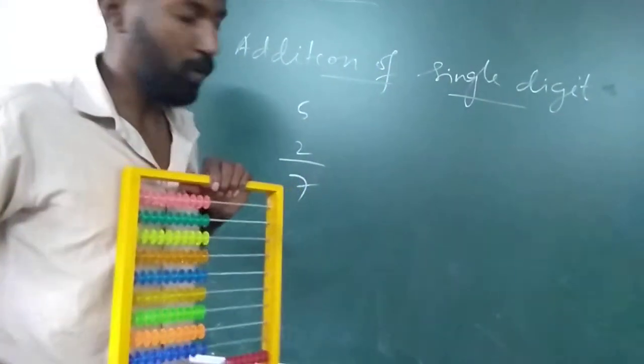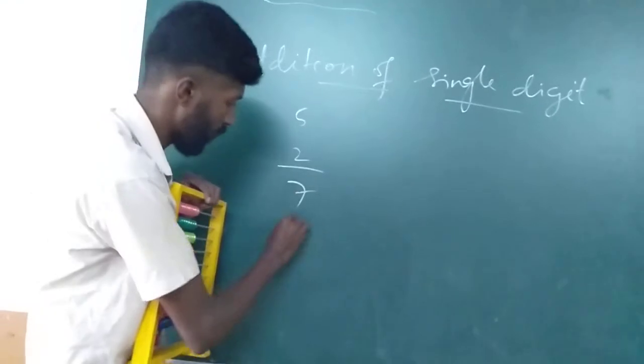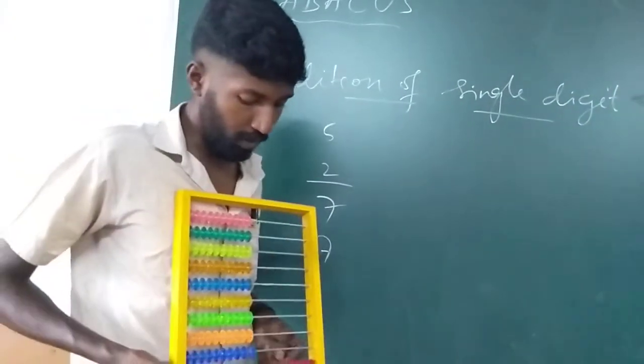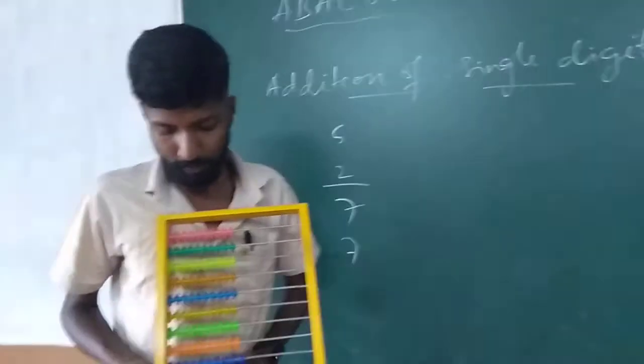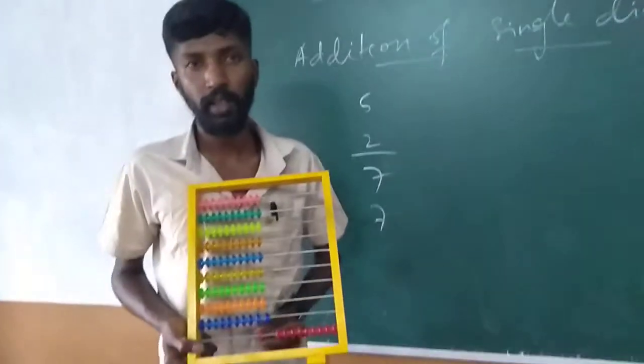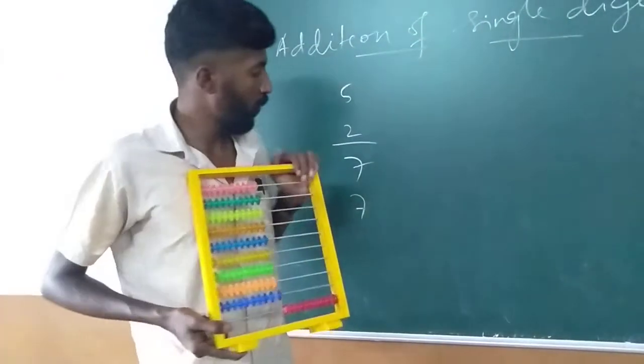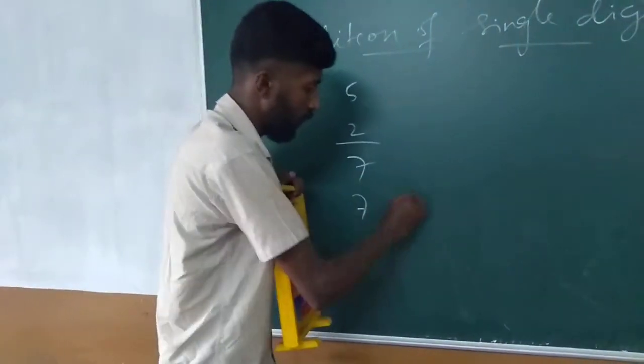Now, suppose if I want to add 7 with this 7. So now this is 7, we are going to add 7 with this 7. So, 1, 2, 3. So, from this 7, we have already added 3.